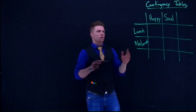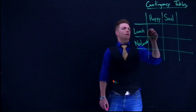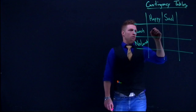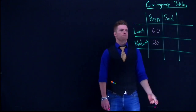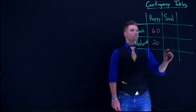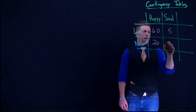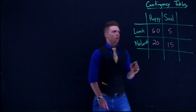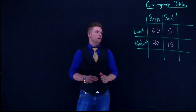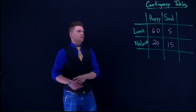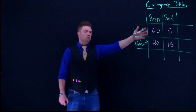Let's suppose the following: for happy and lunch there were 60, for happy and skipped lunch there were 20, for sad and lunch there were 5, and sad and no lunch there were 15. Those are the actual counts. Of the 100 people who took this survey, 60 said they were happy and had lunch, and 20 said they were happy and didn't have lunch.